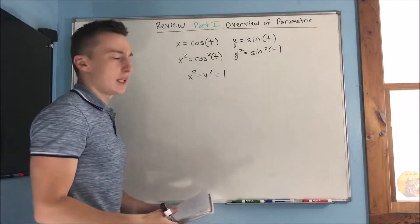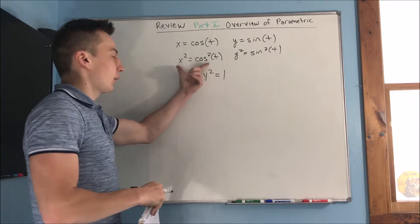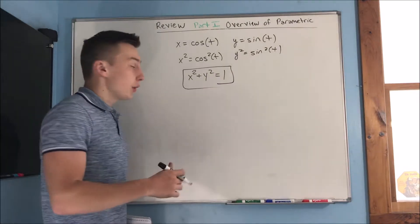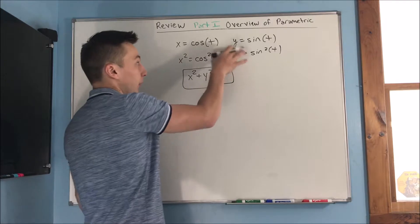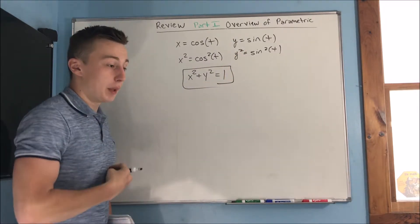You can do that same thing if that didn't make sense. You can put this equation below this equation and add them up. So you can get something back into just x's and y's from your original parametric equations.